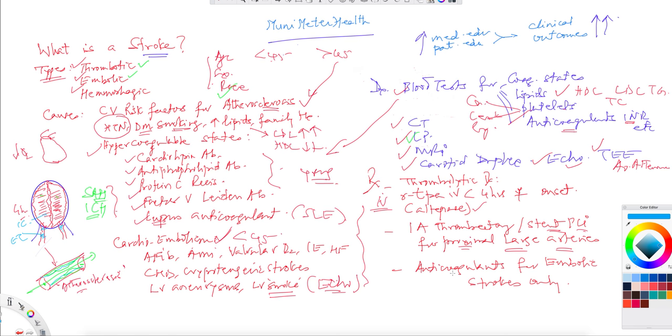Anticoagulants are really reserved only for embolic strokes, provided we have ruled out the hemorrhage part, because some of the embolic strokes later on become hemorrhagic. Once there is no hemorrhage seen on any CT scans or MRIs, no hemorrhage in other words, then you can go ahead.